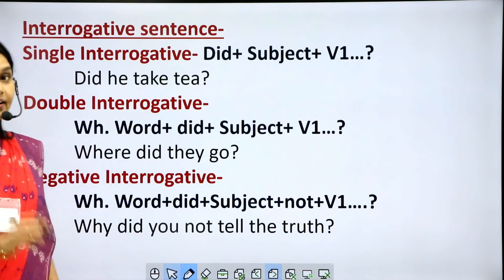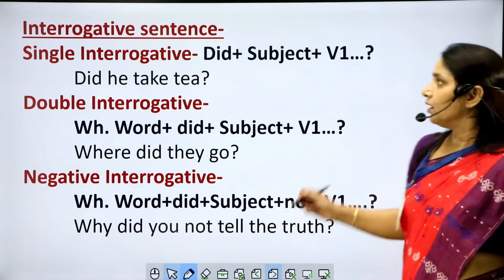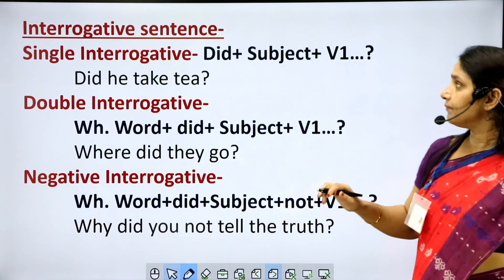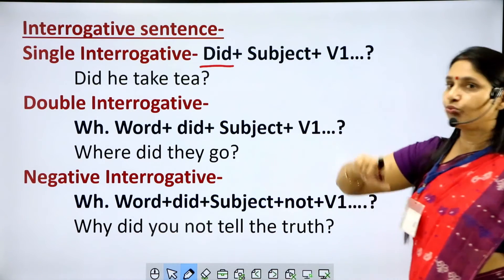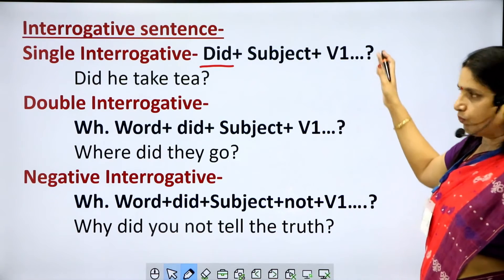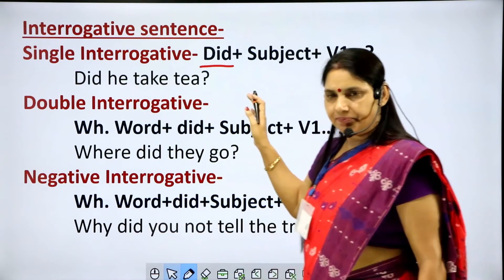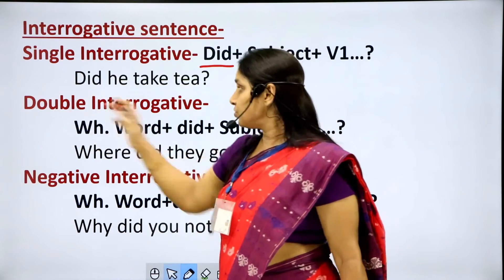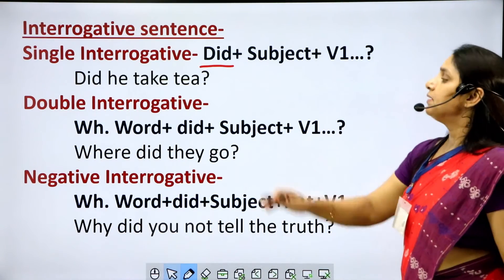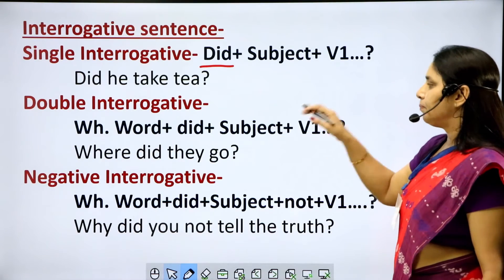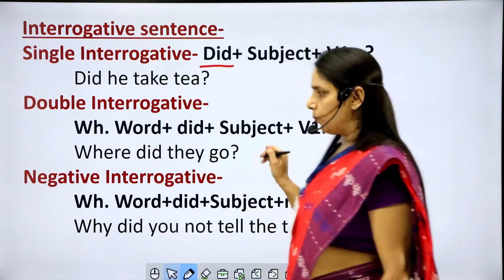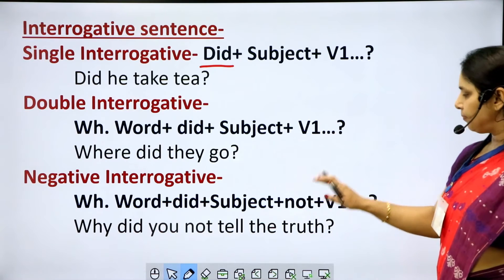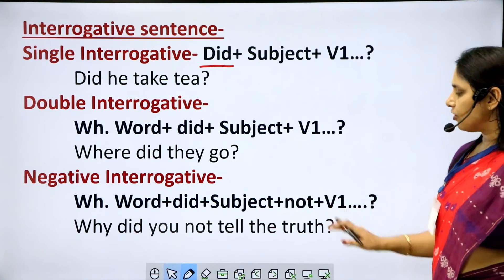Interrogative sentences in simple past tense. Single interrogative: 'did' plus subject plus V1. Example: 'Did he take tea?' — the answer can be yes or no. Double interrogative begins with a WH word: WH word plus did plus subject plus V1. Example: 'Where did they go?' Negative interrogative: WH word plus did plus subject plus not plus V1. Example: 'Why did you not tell the truth?'